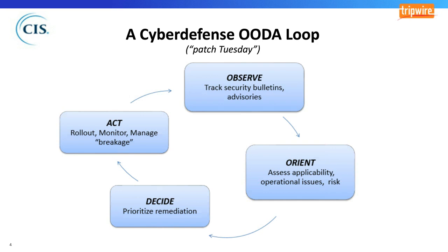Who else is living in this exact same loop? The bad guy. He's waiting for security bulletins and advisories, orienting himself by reverse engineering patches — if it's important enough to put out a patch, there must be something interesting. Is there a vulnerability I can take advantage of? How can I operationalize it, weaponize it, deploy it? Do I have victims with this technology in a vulnerable state? Let me deploy this weaponized version before the good guys can fix the problem.